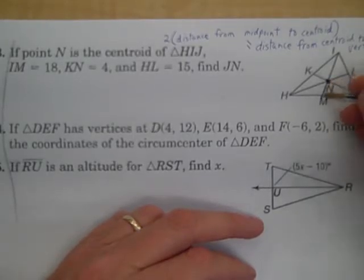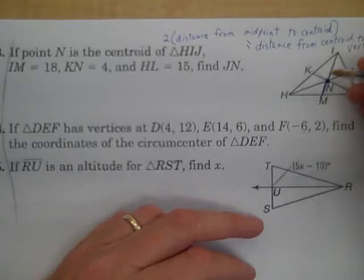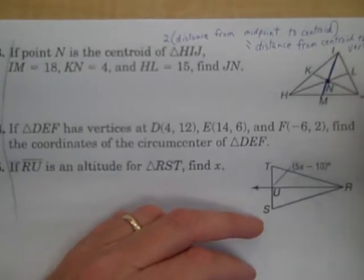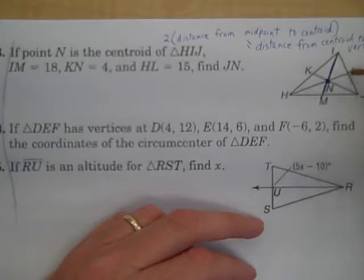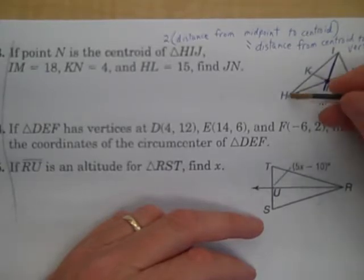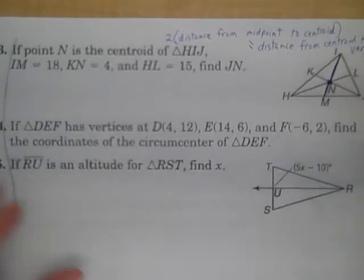So, from N to M, if you multiply that by 2, if you double it, you're going to have from I to N. That's K to N times 2 equals N to J. L to N times 2 equals N to H. That is the centroid theorem.